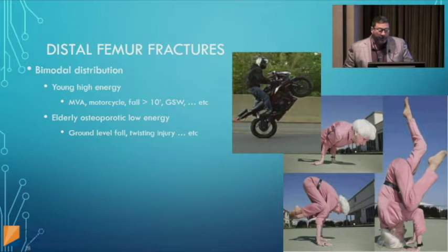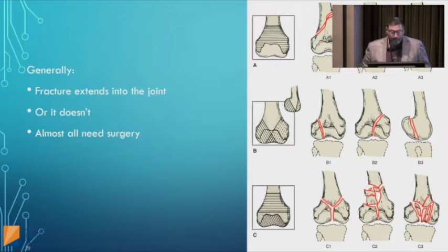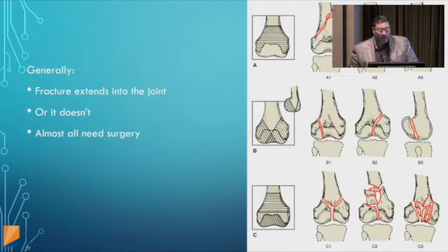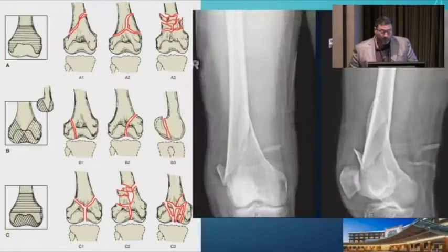The AO classification for distal femur fractures: Type A is extra-articular, not involving the joint — A1 through A3 based on amount of comminution. Type B involves only one condyle — medial, lateral, or posterior. Type C involves the joint with comminution above and/or within the joint. Most if not all of these fractures require surgery.